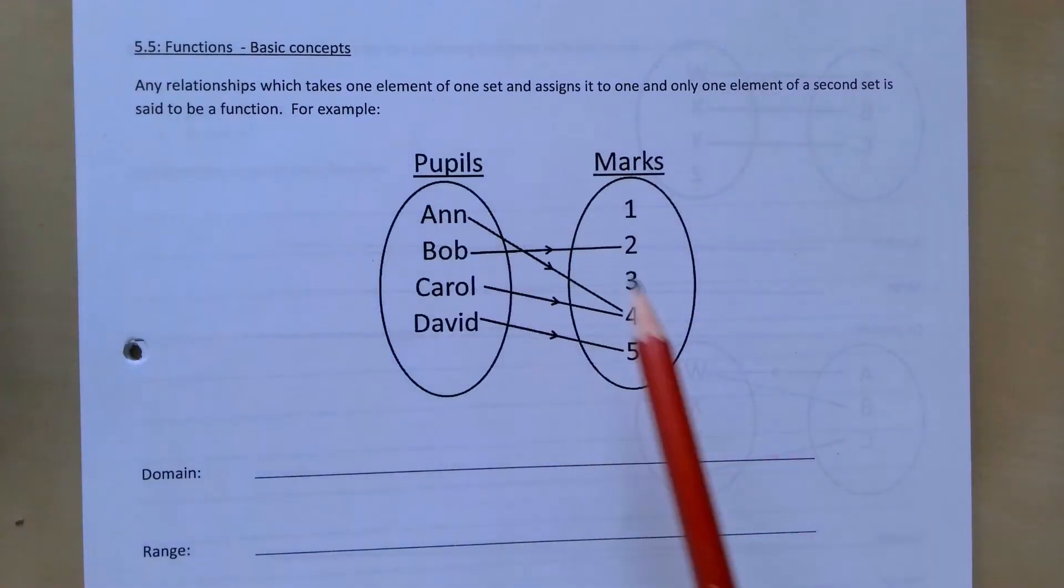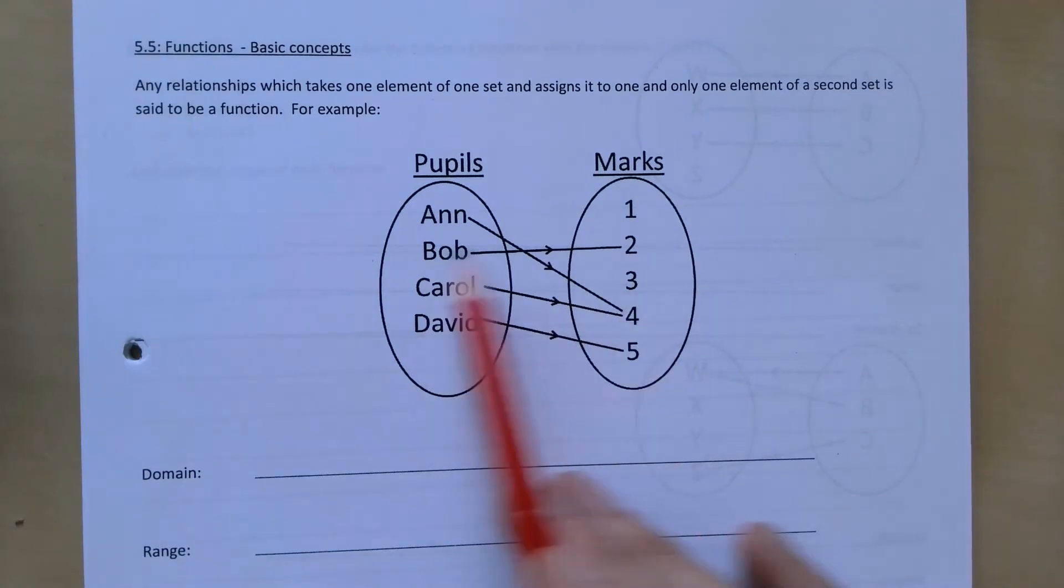For example, here's some pupils and the marks they got in a test. Ann got 4, Carol got 4, Bob got 2, and David got 5.